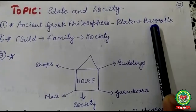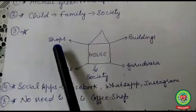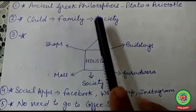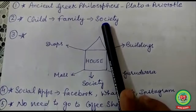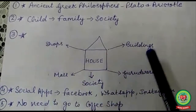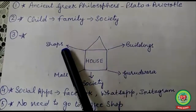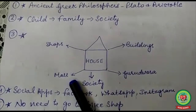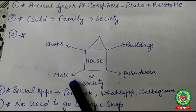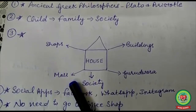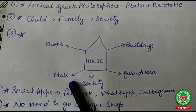When a child is born, he is born in a family and a name is given to him — the family is part of society. You all live in a house, and that house has surroundings like buildings, a gurudwara, or some shops — this is your society. Society is often defined as the sum total of social relations among people. A society is a human organization whose members live together and cooperate with each other for the fulfillment of their common objectives.